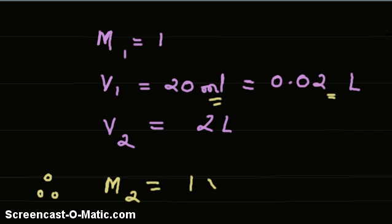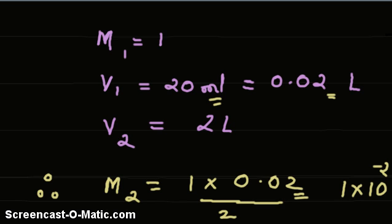So plugging the values, M2 is equal to 1 into 0.02 divided by 2, which equals 1 into 10 raised to minus 2.